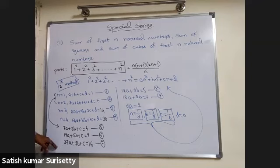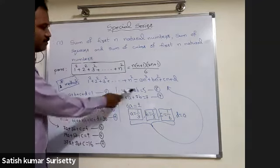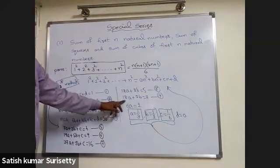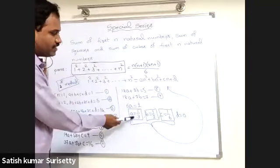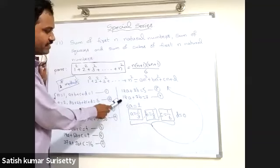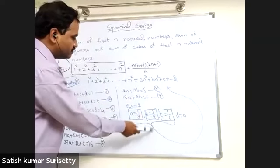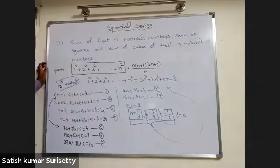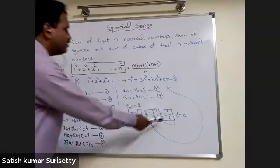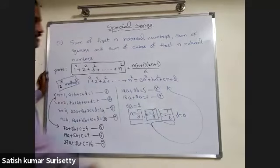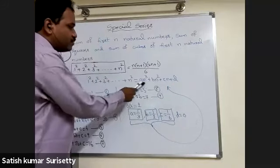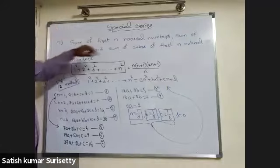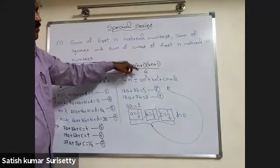Now eliminate c to get two more equations: 12a plus 2b equals 5 and 18a plus 2b equals 7. Eliminate b to get the value of a. Substitute a equal to 1 by 3 to find b equal to 1 by 2. Then substitute a and b to find c equal to 1 by 6. Substitute back into the first equation to find d equal to 0. Substituting all values gives n into n plus 1 into 2n plus 1 upon 6.